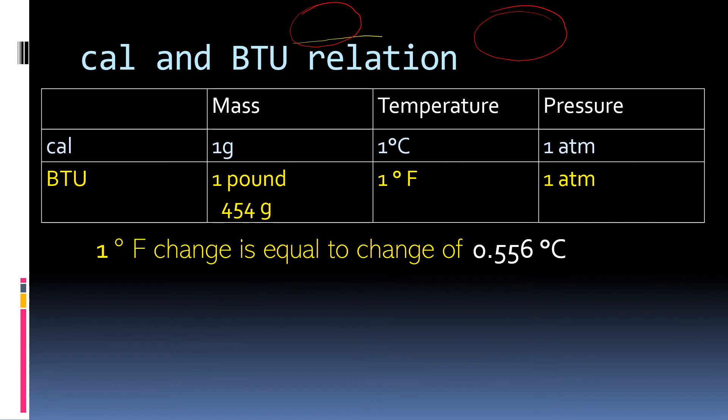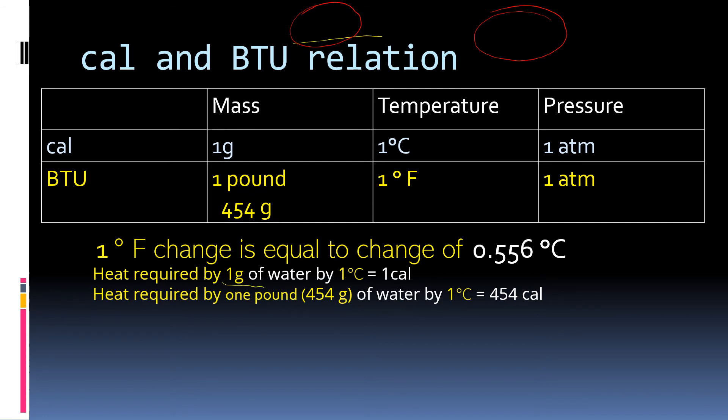Since we have idea about 1 calorie, we can develop the relationship between calorie and BTU. If you compare Celsius and Fahrenheit scale as we have done earlier, 1 degree change in Fahrenheit will be equal to 0.556 degree change in Celsius. The heat required to raise temperature of 1 gram of water by 1 degree Celsius is equal to 1 calorie. So if we change this to 454 grams, then the heat required will be 454 calories.